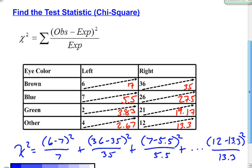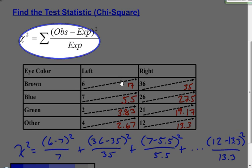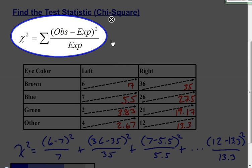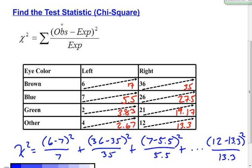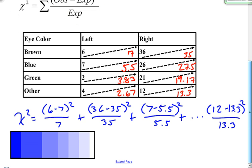Now I can find the test statistic. The formula I'm going to use is the chi-squared formula — and I want to point out it's pronounced 'chi' with a K sound, so chi-squared. The chi-squared formula says to take the observed values minus the expected values, square that difference, divide by the expected value, and then sum all of those up for each cell. This symbol means find the sum.